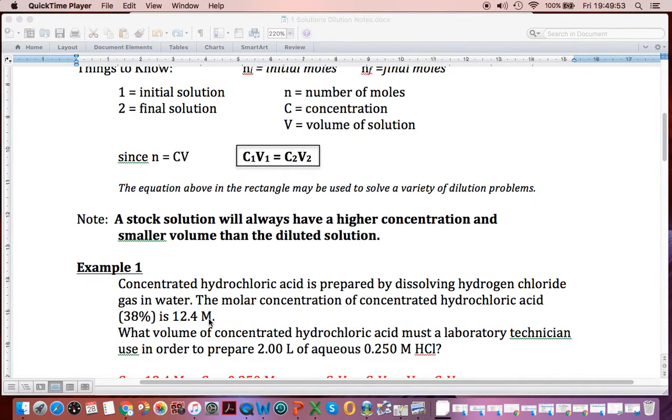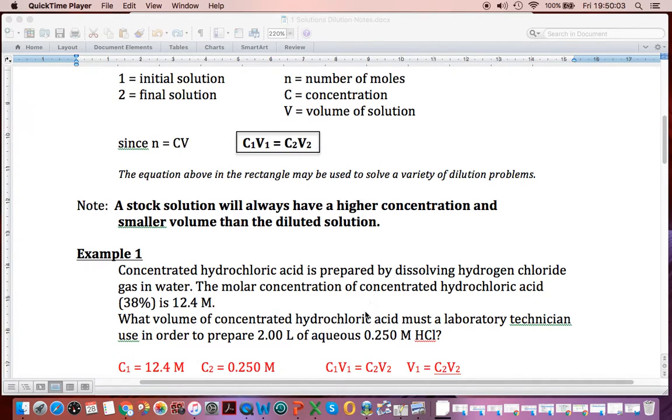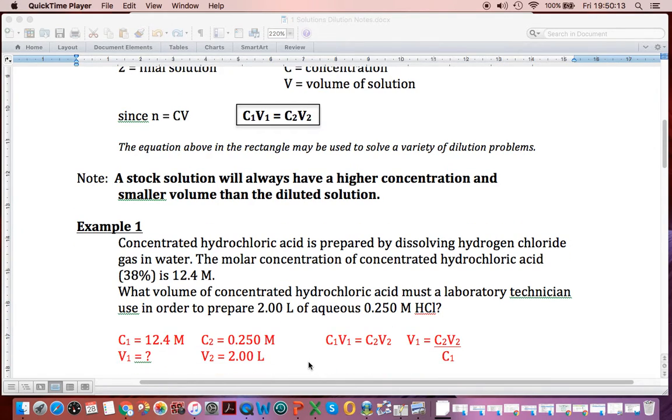So we want to know the volume of that. Then we're going to need to make 2 liters of just 0.25 M. Now it doesn't matter what we call 1 and 2, as long as we get things paired off right. So I'm going to say that C1 is 12.4 molar, and I'm going to say that C2 is 0.25 molar. Then I'm going to say V1 is the unknown, because I want to figure out that volume. And V2 is 2.00 liters. So I have C1 V1 equals C2 V2, and the dog is unimpressed by this.